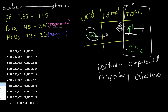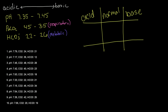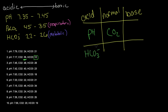Let's look at problem number two. We have a pH of 7.17 — this is acid, so pH goes in the acid column. CO2 of 35, which is normal, so our CO2 is fine. Then we look at our HCO3, which is 12 — this is too acidic, so we write down our HCO3, our bicarbonate, in the acid column.